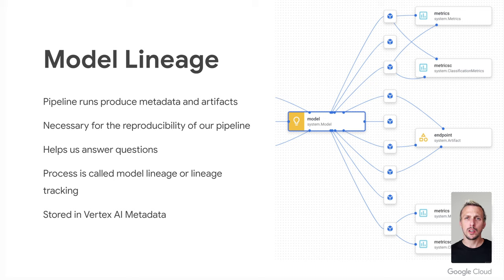Vertex AI is not using the default service account — instead it uses a special one, which you can find on the IAM page. To view and add additional roles to the service agent, you need to enable the checkbox to include Google-provided role grants. Those agents already provide access to BigQuery and Cloud Storage. So if you have issues accessing other Google Cloud Services from within Vertex AI Pipelines, check if the service account has the right permissions. In the documentation you can see the Vertex AI service agent and its permissions: AI Platform, BigQuery, AutoML, Dataflow, Data Labeling, and Google Cloud Storage. If you're using another product not already included, make sure to add the permissions explicitly.